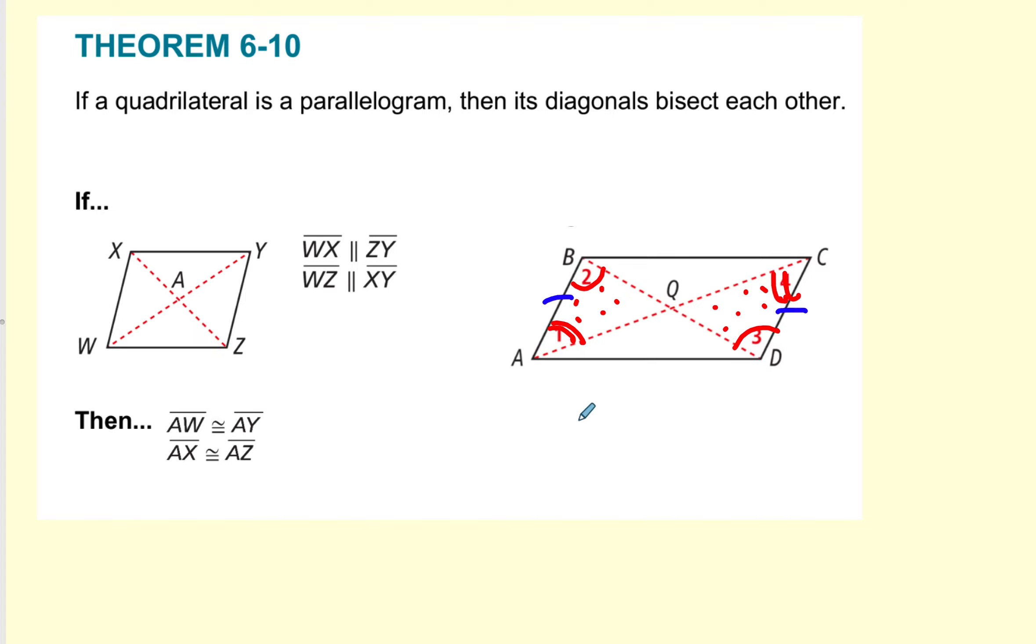And we do have opposite sides are congruent here. So now I know that triangle ABQ is congruent. Now A goes with C, and B goes with D, and then the Q. By, and this is angle, side, angle. The side is included.